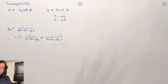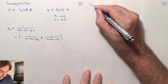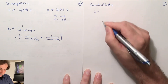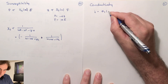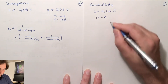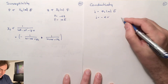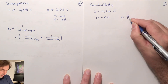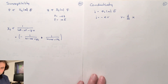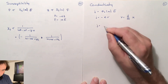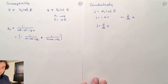We do not only have the susceptibility as a response function — we can also look at the conductivity. The current is given by the conductivity times the electrical field. We can relate the current as minus the electrical charge of an electron times its velocity, and the velocity is just the time derivative of the position. Since e times v is the time derivative of e times x, and e times x is the dipole moment, the current can be expressed as the time derivative of the induced dipole moment.